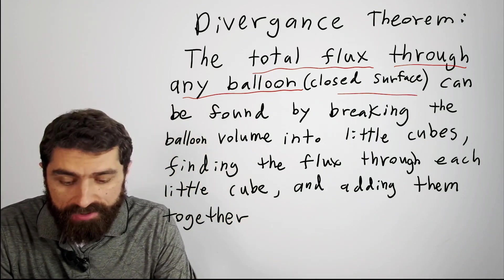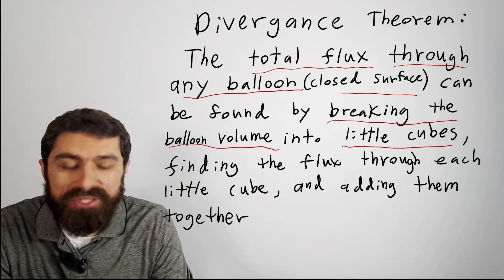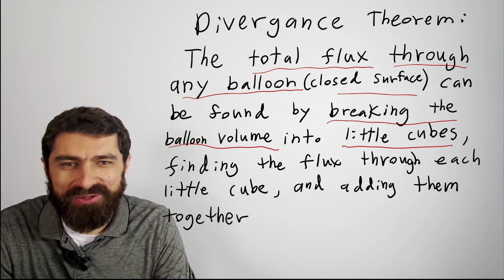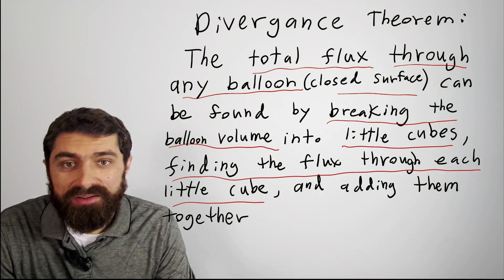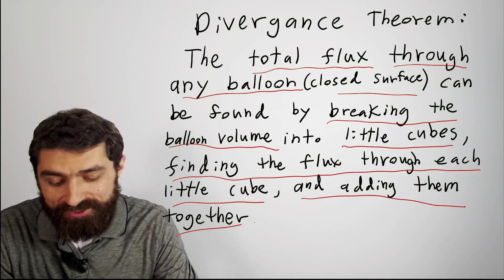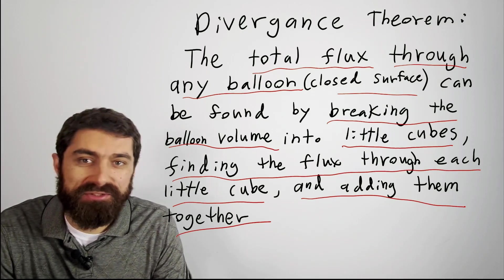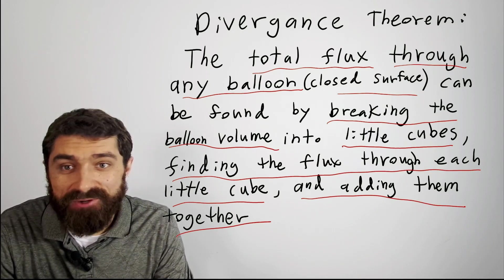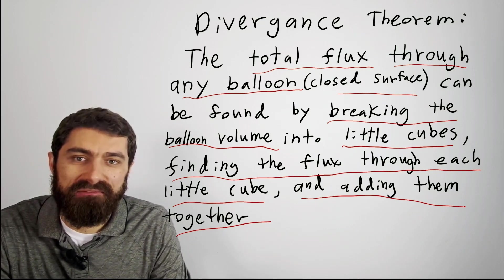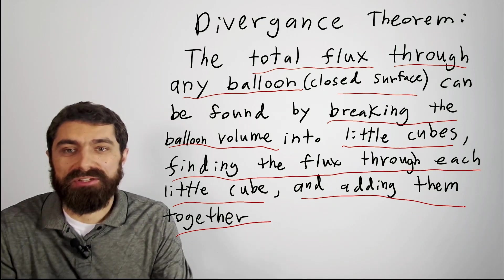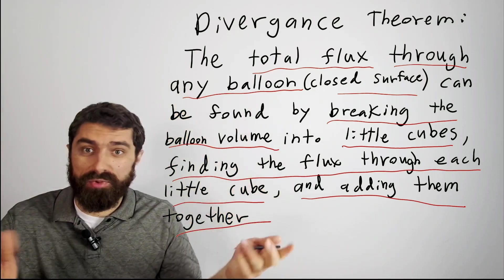It can be found by breaking the balloon volume into little cubes, or infinitesimally small cubes, finding the flux through each little cube, and adding them together. So you remember that the flux through a little cube is the divergence, and what this is saying then is that we can add them together to figure out the flux through a much larger surface, through a much larger cube, much larger balloon, whatever that may be.